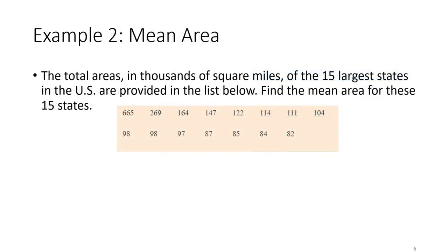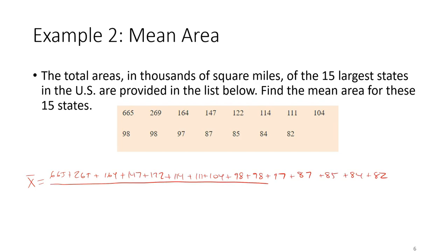Now let's practice with the mean using the total area of the 15 largest states. We're going to add all these values up and divide by 15. Adding everything up we get 2,327, and dividing by 15 gives an average area of 155.13 square miles.